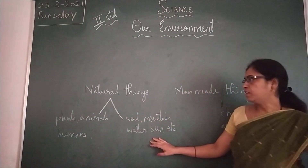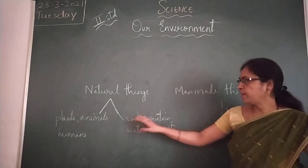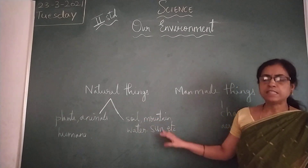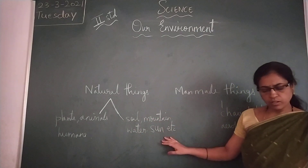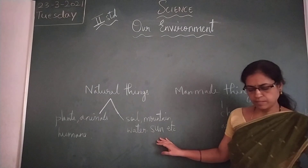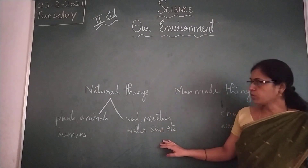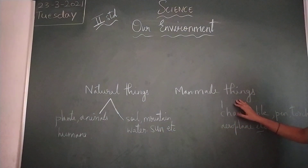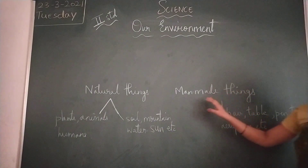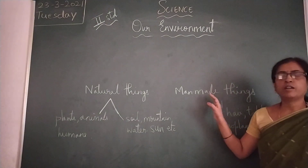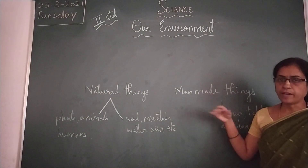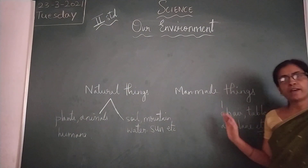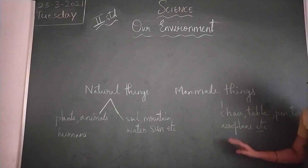Soil, mountain, water, sun etc. are non-living things. So let us learn about man-made things. Things that are made by man are called man-made things.